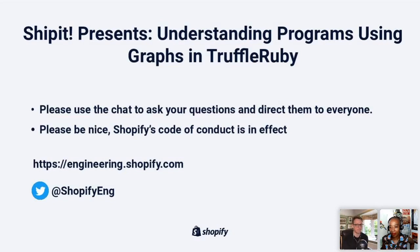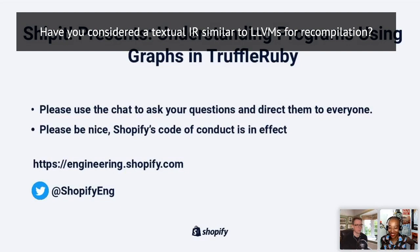Have you considered a textual IR similar to LLVM's for decompilation? I think it means decompilation. We're looking at being able to output Java and Ruby. The decompilation is pseudocode — you couldn't actually run it, and if you did, the semantics would be quite different. We do it as Ruby code by default because people understand Ruby code and it's quite good pseudocode. But yes, you could do a well-thought-out standardized Graal IR textual representation if you wanted to, and that could be a useful thing to do.